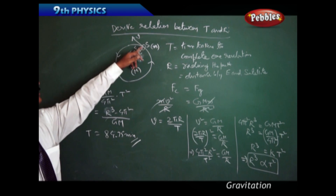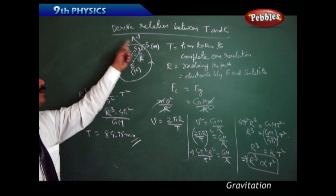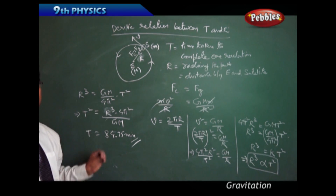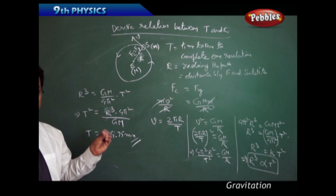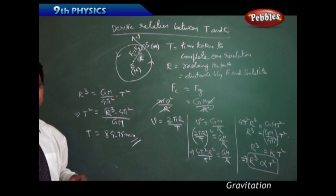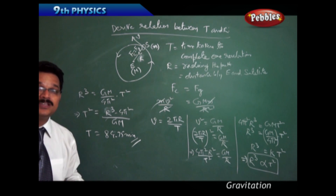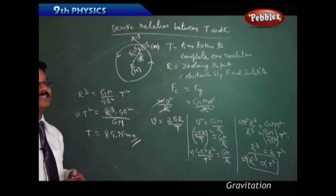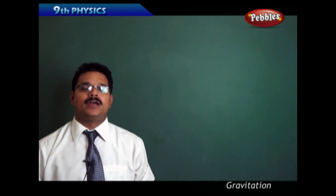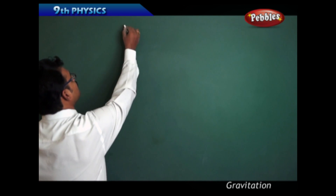This means a satellite rotating exactly at the surface of the Earth takes 84.75 minutes to complete one revolution. Based on this time, scientists calculate the velocity required to launch the satellite so it continues to orbit the Earth. This concept is applied when launching satellites using rockets such as PSLV and GSLV. Capital G is the universal gravitational constant applicable to any object anywhere in the universe.